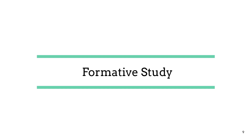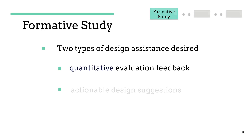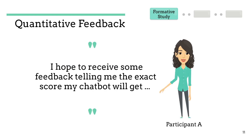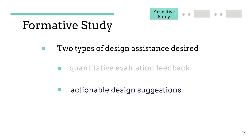This system was developed under the guidance of a formative study where we identified two types of design assistance desired by chatbot designers. The first type is objective quantitative feedback on their existing chatbot design. Almost all participants expressed the need for receiving such feedback on their chatbot. For example, one participant mentioned: 'I hope to receive some feedback telling me the exact score my chatbot will get.' The second type is actionable design suggestions for improving the existing chatbot.